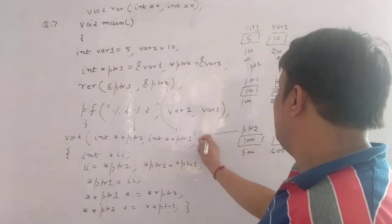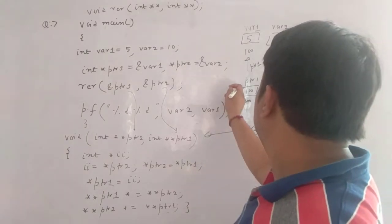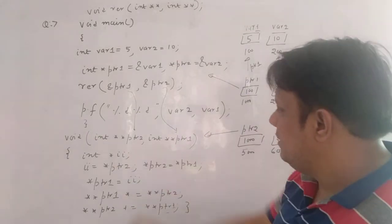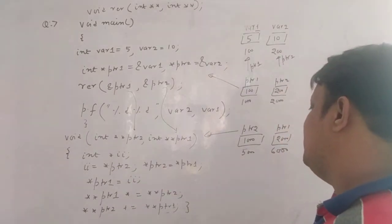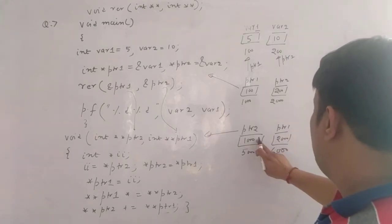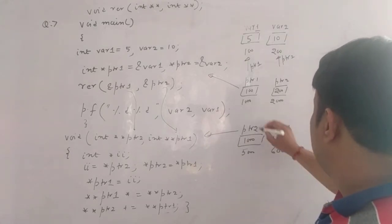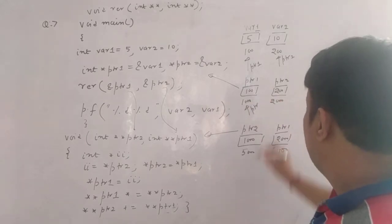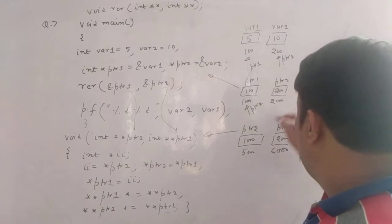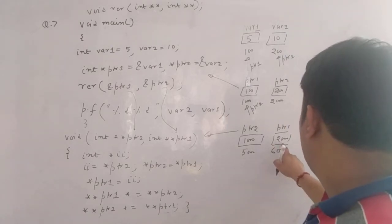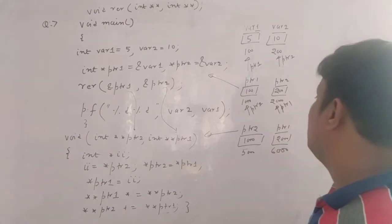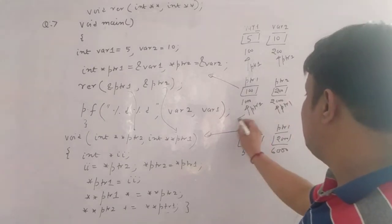This ptr2 belongs to this function. Now we have taken a variable int **ii, and ii is equal to *ptr2. See, ptr2's value is 1000, this ptr2 is pointing here. And ptr1 is pointing at 2000. So these are these values.